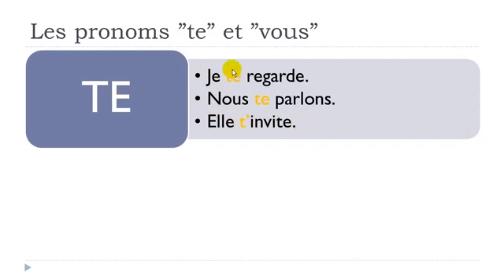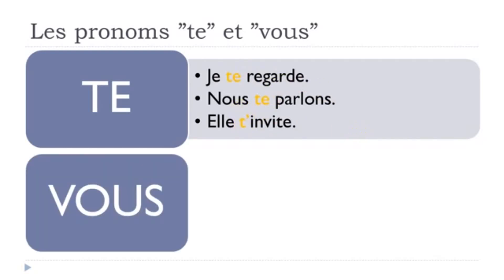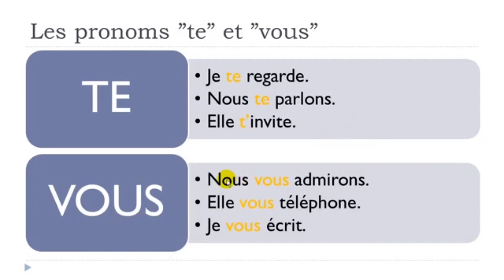Remember, the pronouns must be placed before the verb, and it will be exactly the same for the vous pronoun. So let's have a few examples. Nous vous admirons — we admire you. The pronoun vous must come before the verb. I will read it with the liaison: Nous vous admirons.